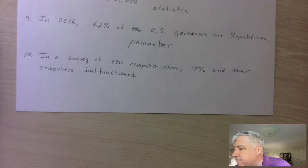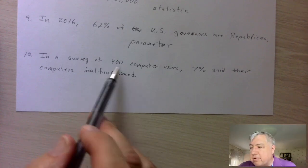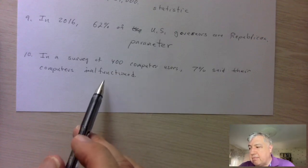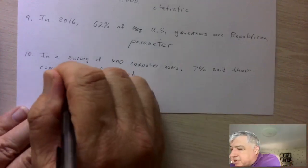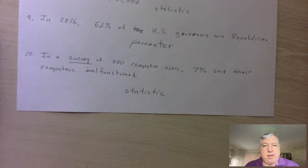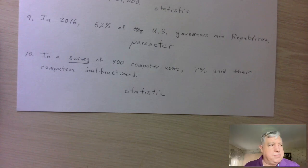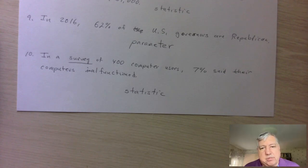The last example: in a survey of 400 computer users, 7% said their computers malfunction. Because there are obviously more than 400 computer users, this is a sample, and the result is a statistic. Any time you have a survey result, it's going to be a statistic, because you're taking a sample. So to recap: a parameter describes a population, a statistic describes a sample, and data is information. That's really all we wanted to cover today. You have enough now to do the first section — see you next time.